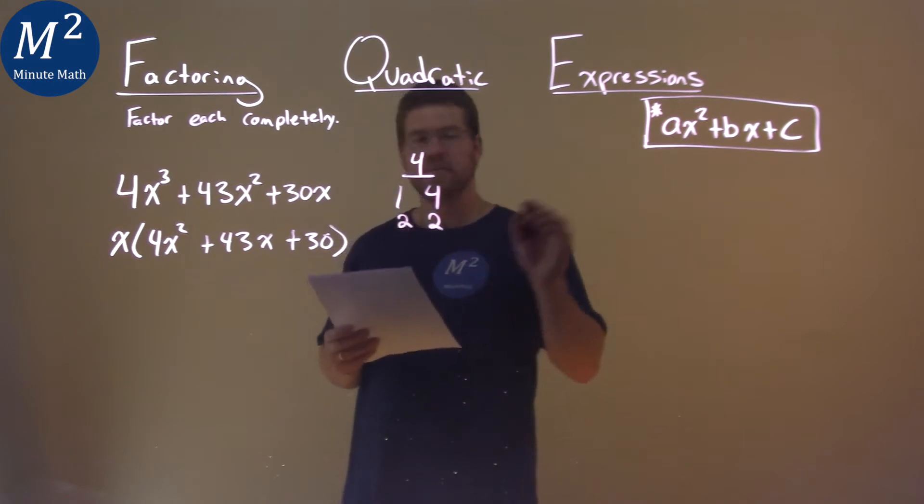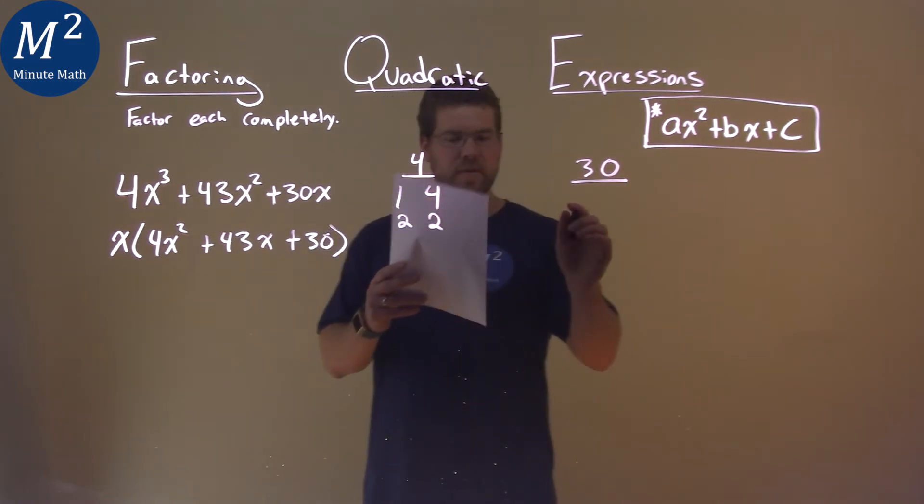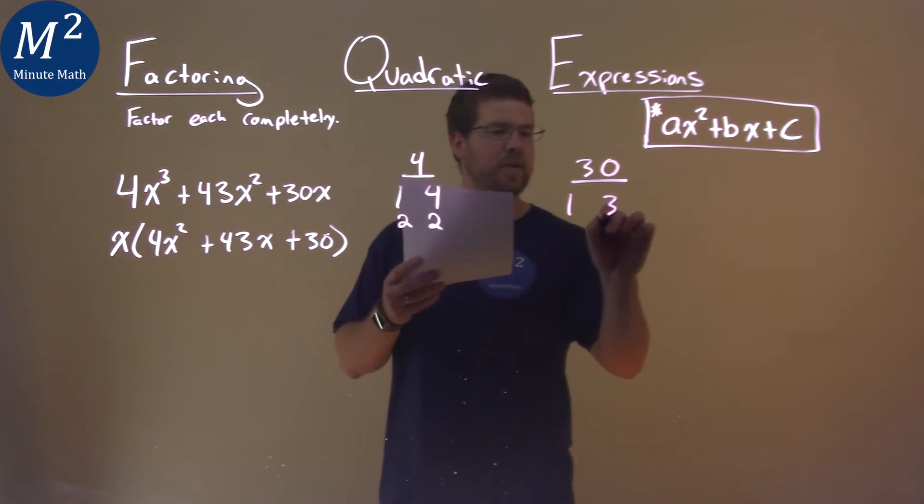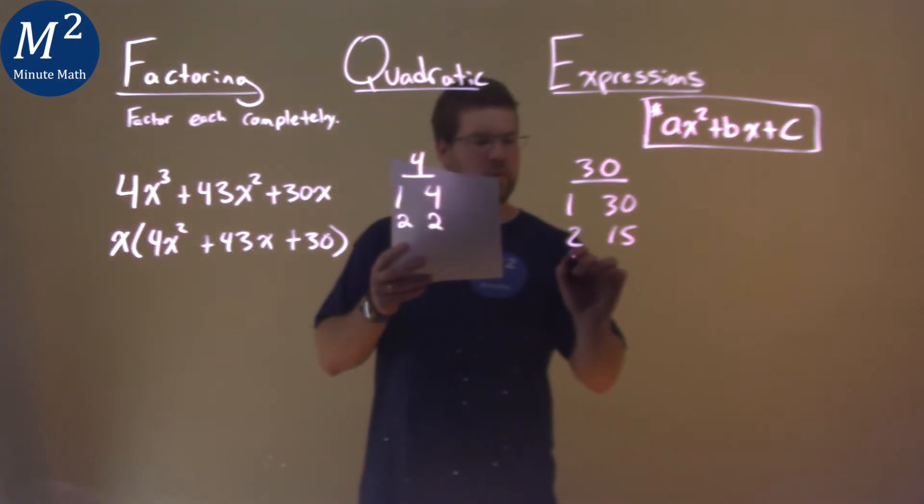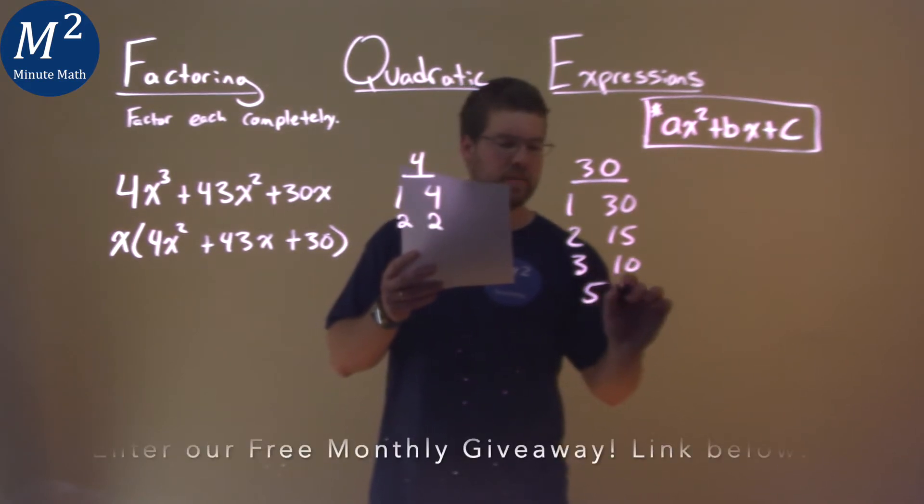Our c value is 30, and that can either be 1 times 30, 2 times 15, 3 times 10, or 5 times 6.